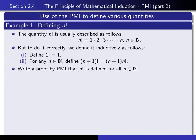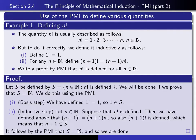The claim is that if we do it this way, then the factorial function is actually defined for all n by these two properties. Let's write a proof of that fact making use of the principle of mathematical induction. We let S be the set of all natural numbers such that n factorial is defined, and our intention is to show that S equals all of N.